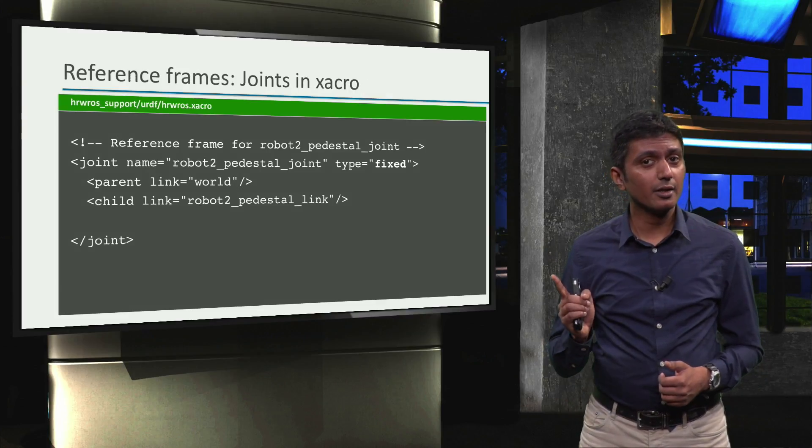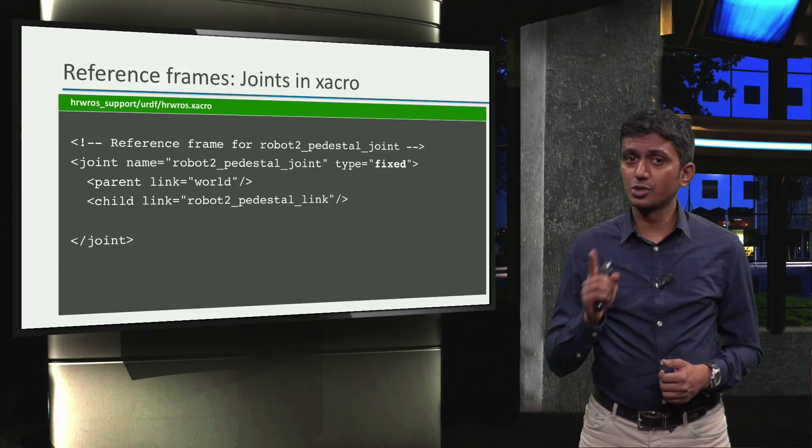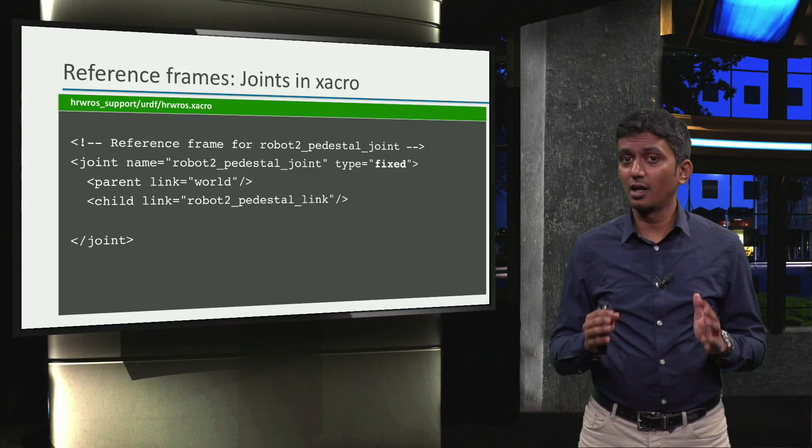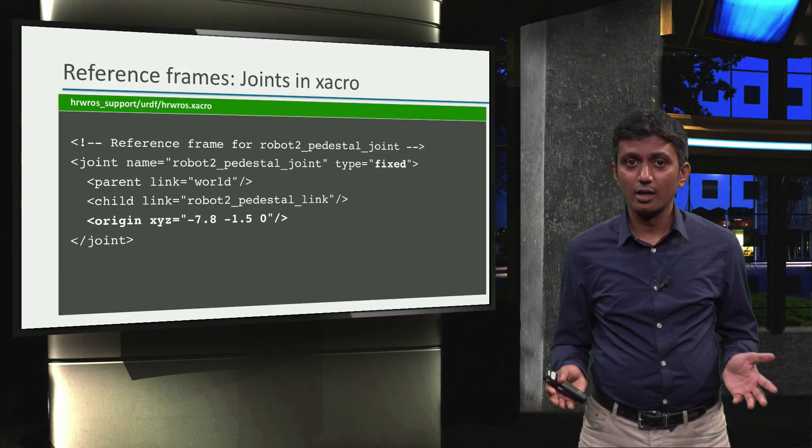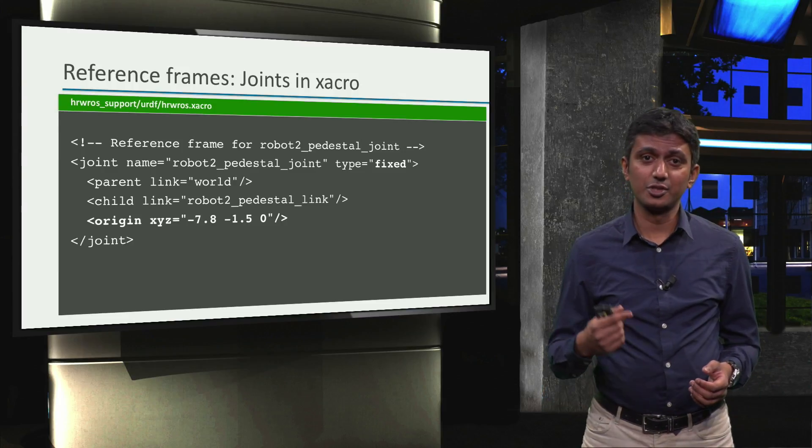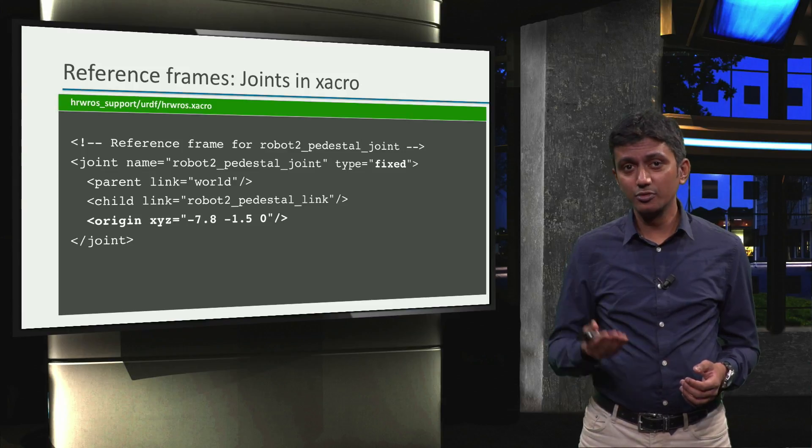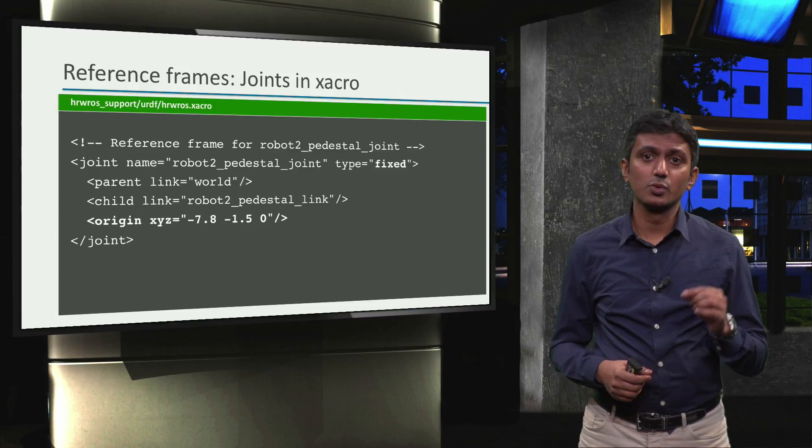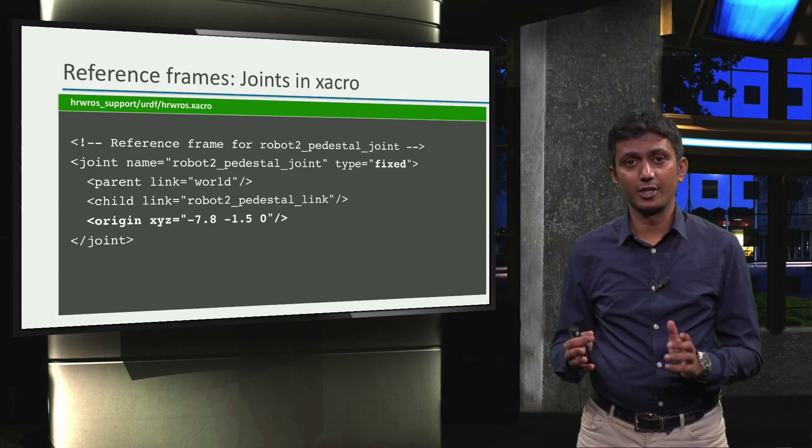Remember week 2 again? When you first added the box geometry for the pedestal, it was at an incorrect location and stuck halfway in the floor. And the origin tag of the joint element was modified to move the pedestal to the correct location. This origin tag is what defines where the TF frames are placed.